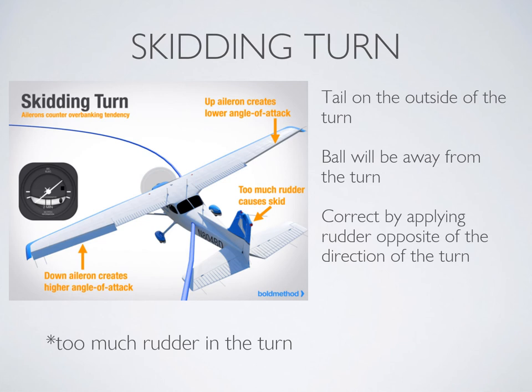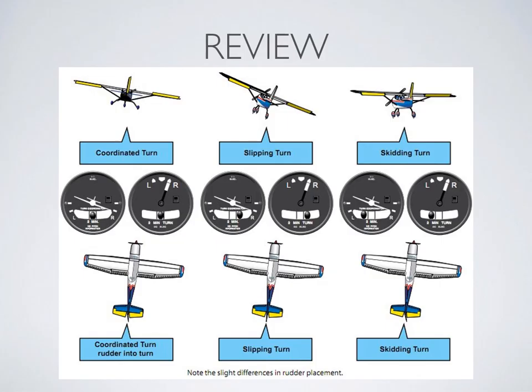Skidding usually results from attempting to tighten the turn and should be avoided. Here are some more examples of instrument indications from a coordinated turn to a slipping turn to a skidding turn. I always remember: if the wing and the ball are touching, then I'm in a slip.